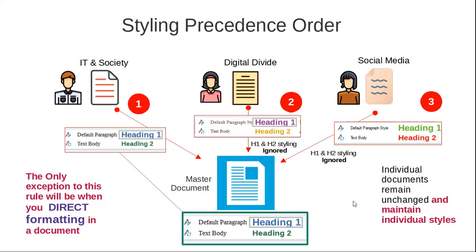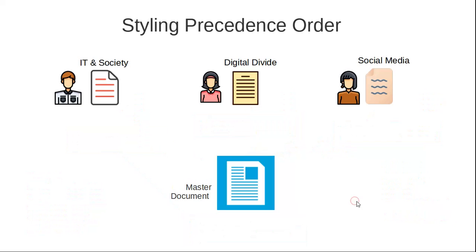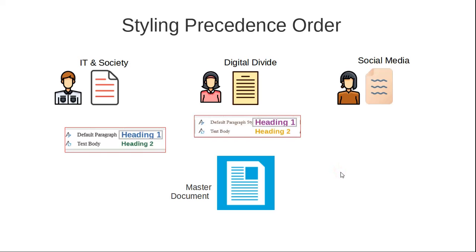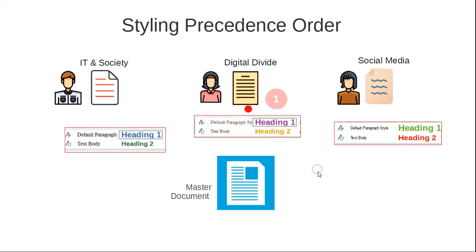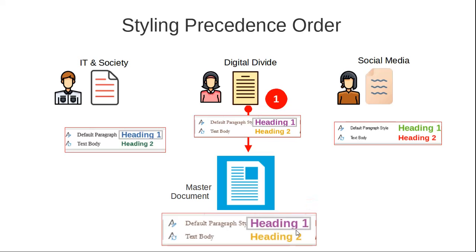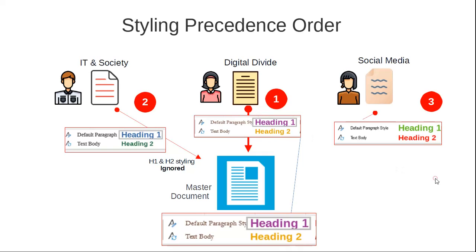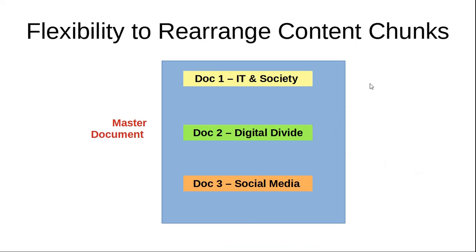If you were to open these individual documents they would continue to maintain their individual style. Also, note that if I change the order — say I bring my colleague's document in first — Heading 1 and 2 will then inherit her style, and when I bring my document in, my styling will be ignored. This is how the master document styling precedence order works. Another great advantage is that once the container document is linked to different documents, it reads as a single document.